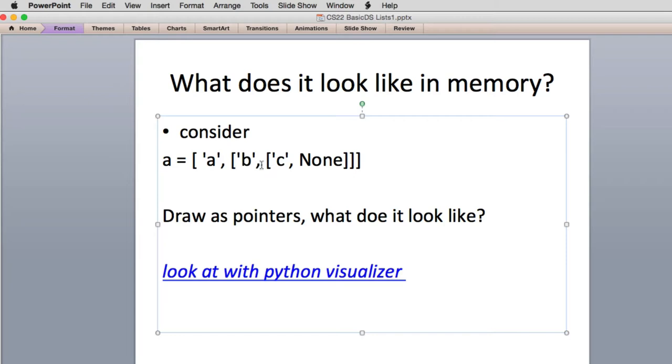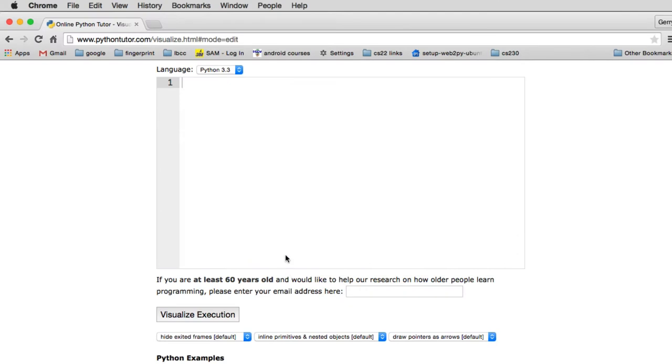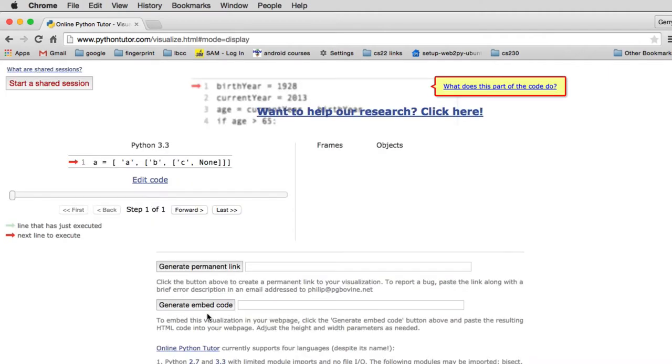So each one of these things is an object, but the lists are more complex objects. So let's look at what it looks like. So I'm just going to copy this expression, and I'm going to go to the Python visualizer, and I already have it open. And I'm going to paste that in. And then I'm going to visualize it. And then we're going to step forward, and we'll see we have something very interesting.